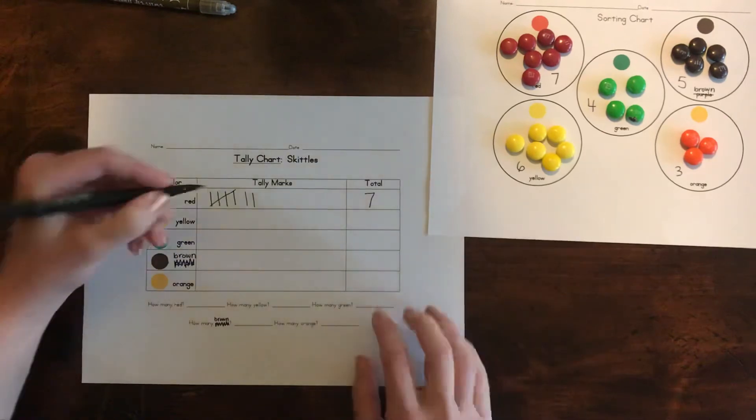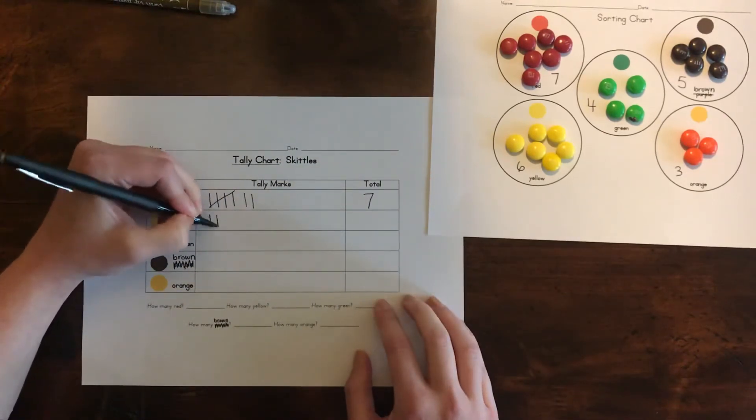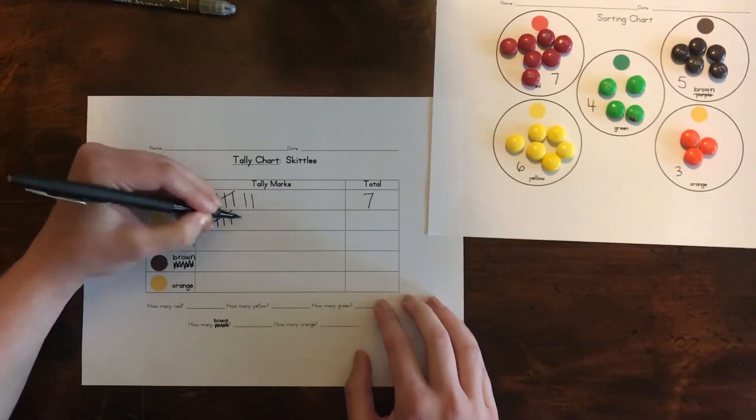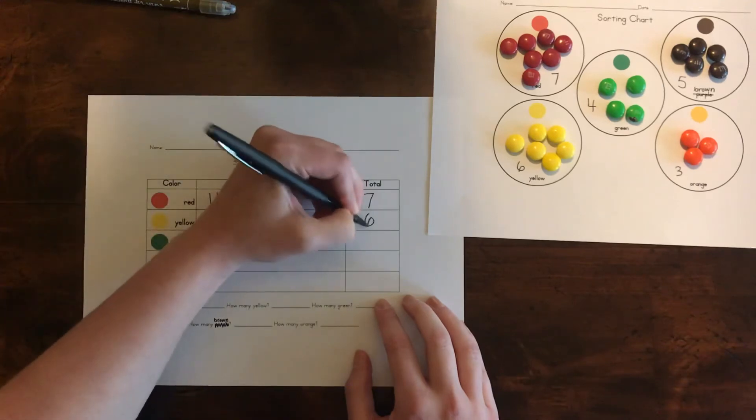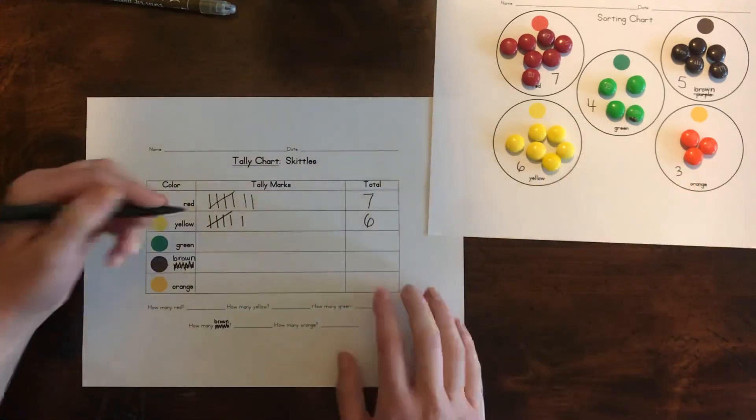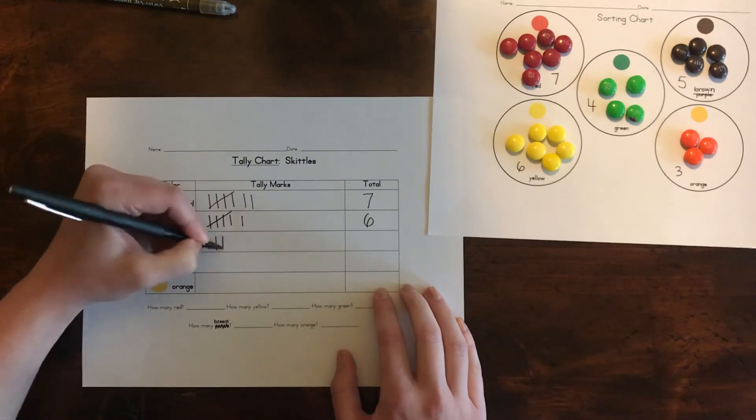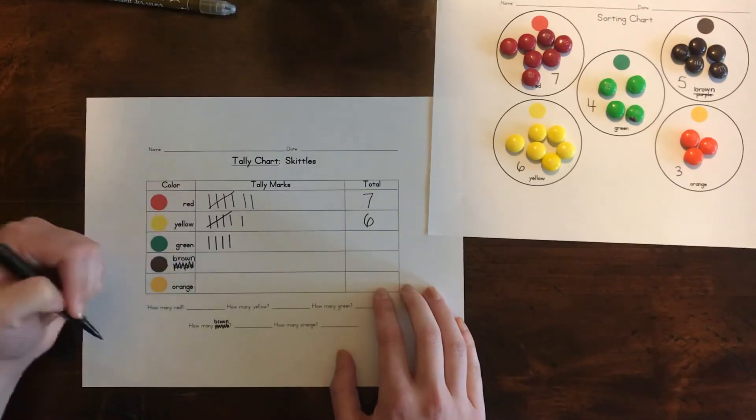Then we see we had six yellow. So one, two, three, four, five, six. We write a six. Then green. We had four. One, two, three, four. No cross for that one.